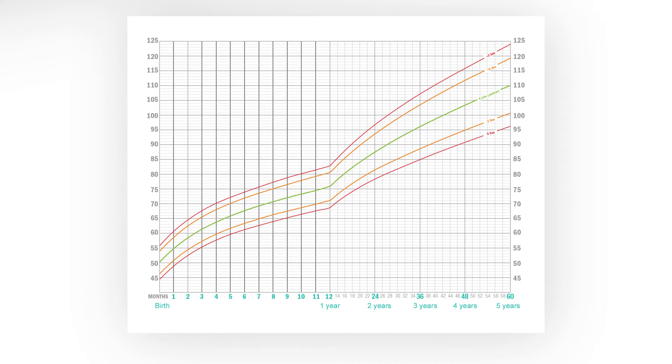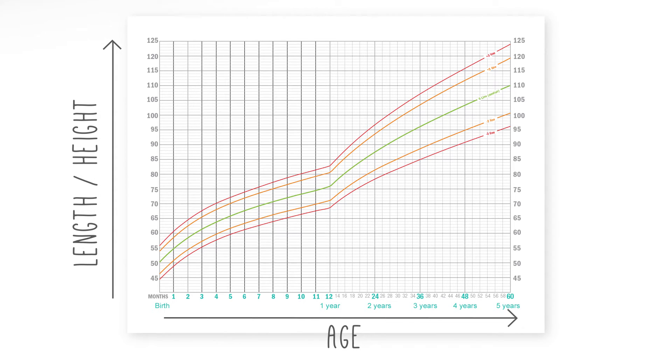On this graph, we see length or height in centimeters along the y-axis and age again along the x-axis at the bottom. For height, we also like to see children growing steadily as they get older.